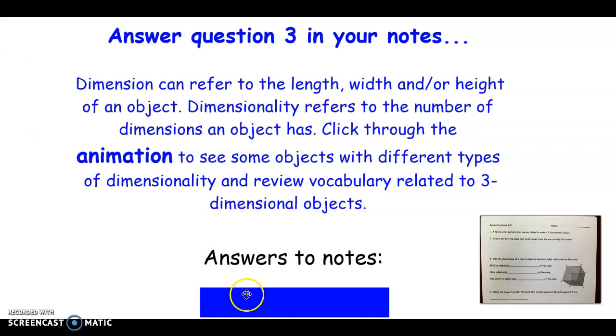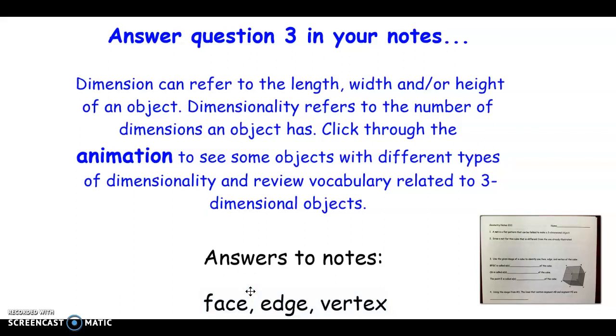By the way, the answers to your notes on questions three. The first one, it says BFGC is called a what of the cube. That is a face. CG is called an edge. And really it should have a segment bar over that. And then the point E is called a vertex.